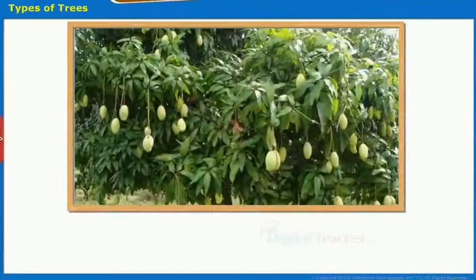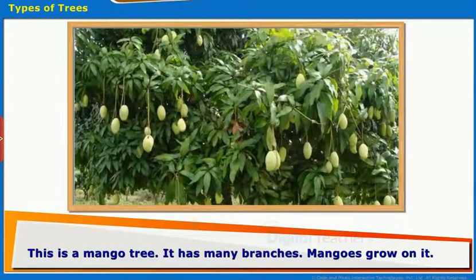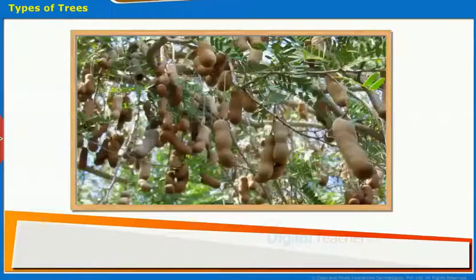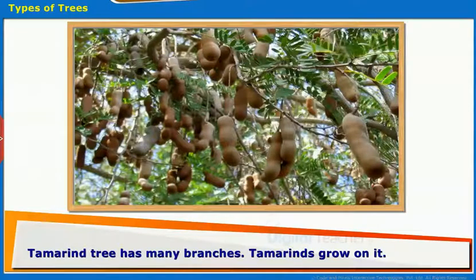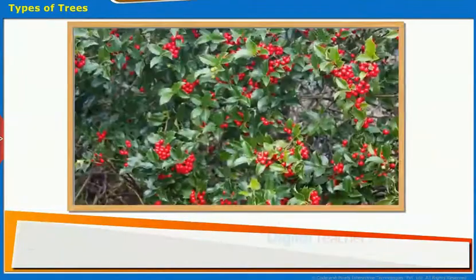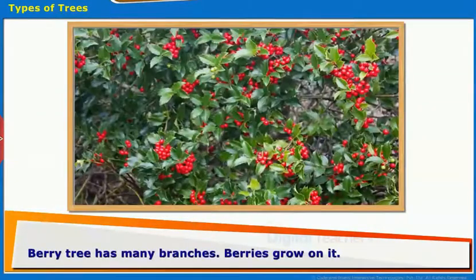Types of trees: The mango tree has many branches and mangoes grow on it. The banyan tree has many branches and also has aerial roots. The tamarind tree has many branches and tamarinds grow on it. The jackfruit tree has many branches and jackfruits grow on it. The berry tree has many branches and berries grow on it.